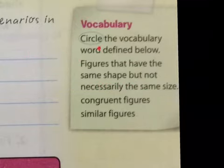A quick review on vocabulary. Circle the vocabulary word defined below. Figures that have the same shape but not necessarily the same size. Are they congruent figures or similar figures? Well remember, congruent figures means it's all the same, right? Same angles and same length of size. But similar means that they have the same shape but they're not necessarily the same size. So yes, it is similar figures.